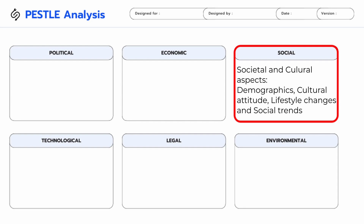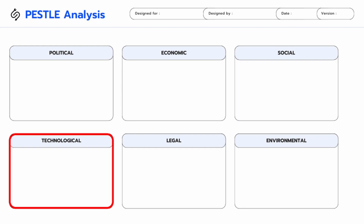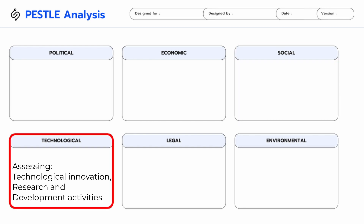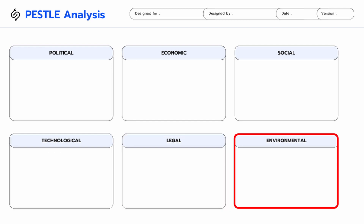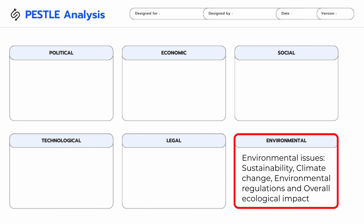Technological factors consider the impact of technology on a business by assessing the rate of technological innovation and research and development activities. Legal factors involve the examination of laws and regulations that can affect a business.